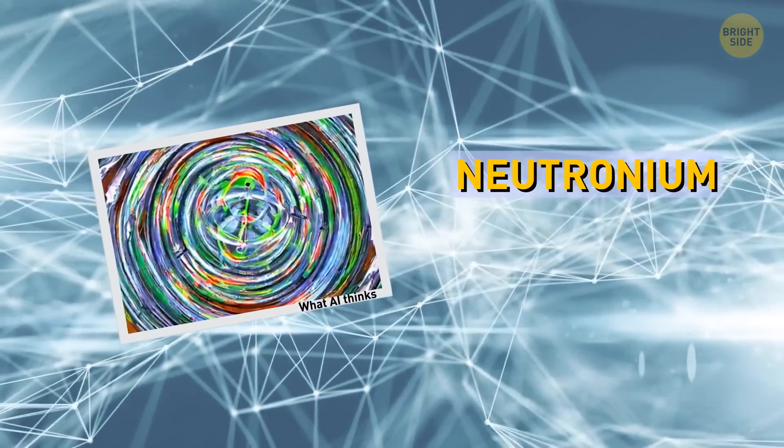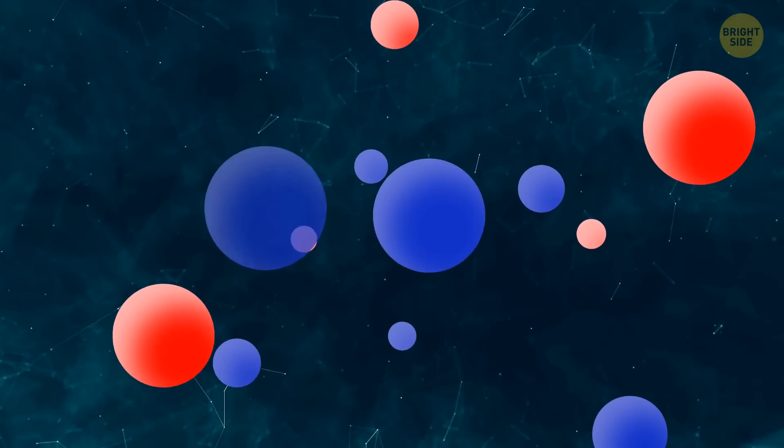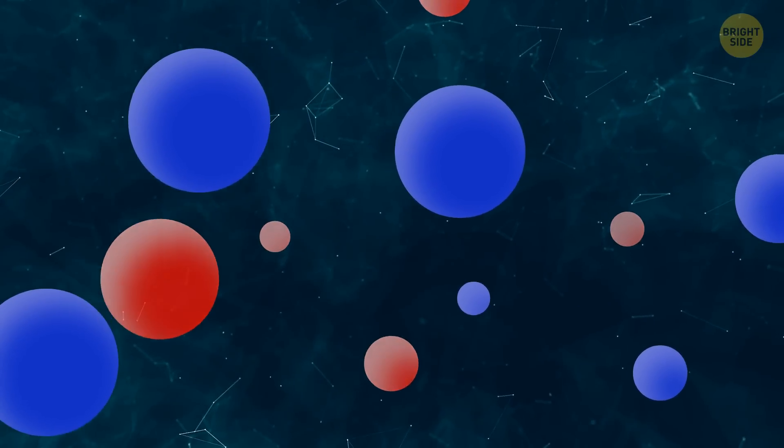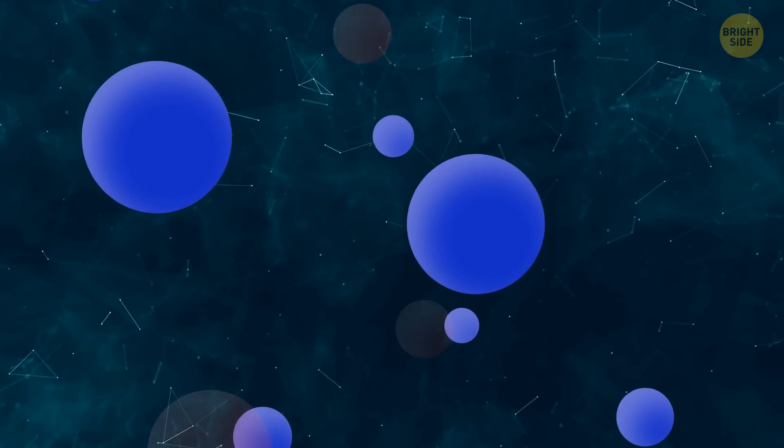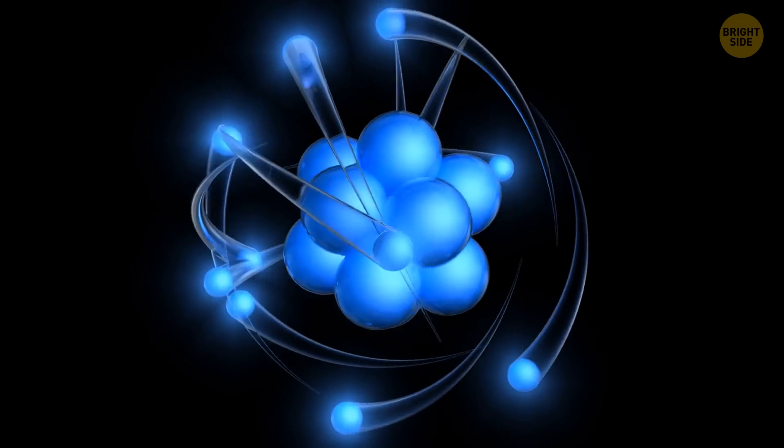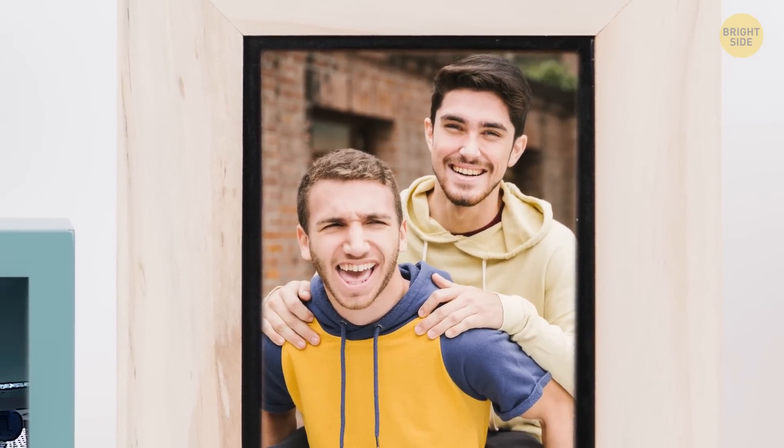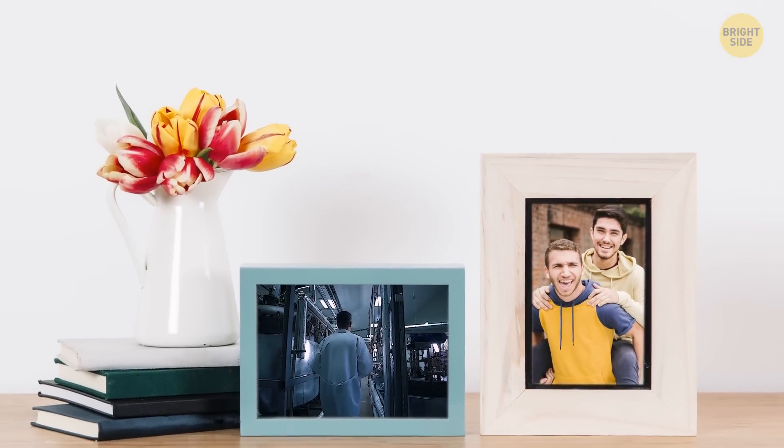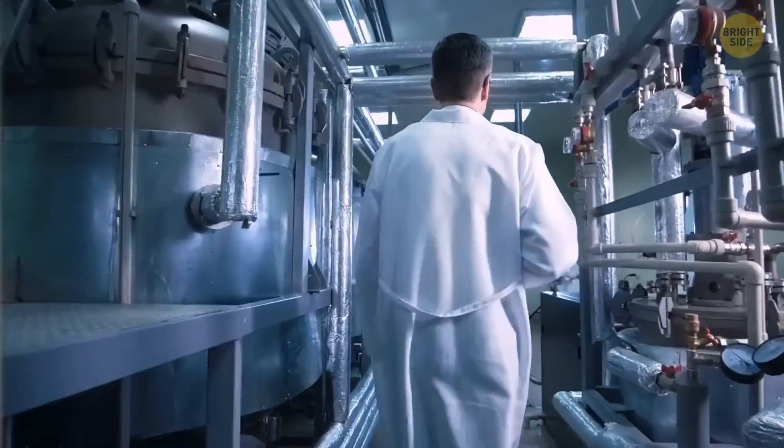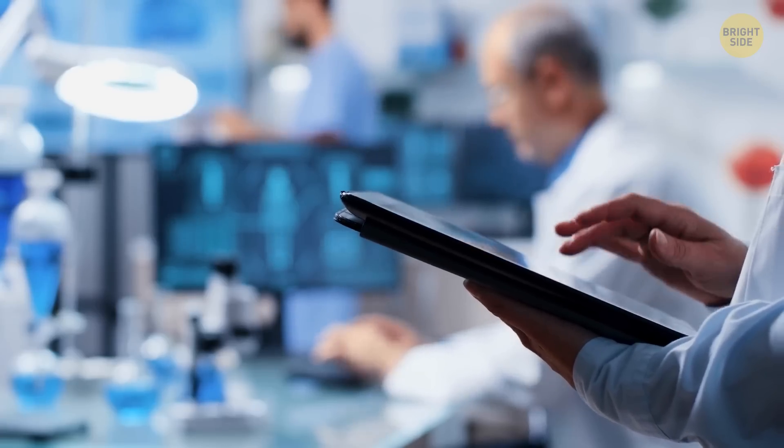And finally, we get to the last weird state of matter called neutronium. Imagine you have a bunch of balls. Some are red, and some are blue. They're all bouncing around, constantly colliding with each other. Now let's take away all the red balls and keep only the blue ones. That's a bit like neutronium. Neutrons are tiny particles that hang out in the nucleus of an atom, along with protons like a cozy group of friends. They're like the chill buddies of the atomic world. They're neutral, meaning they don't have any charge. Hence the name. They play an important role in holding the nucleus together and determining the properties of different atoms.